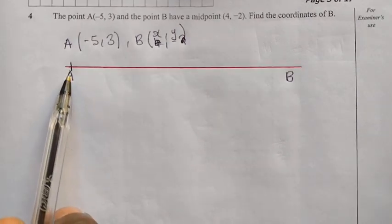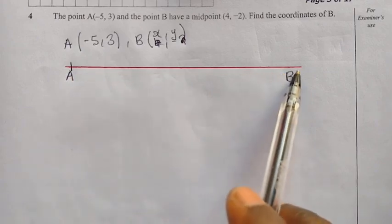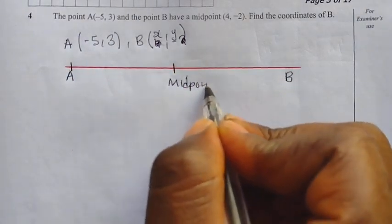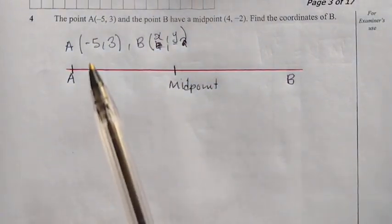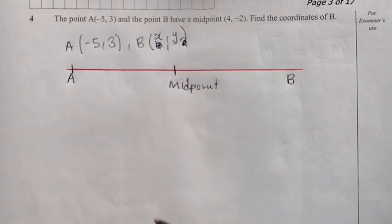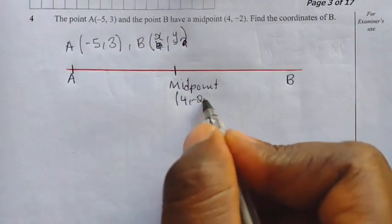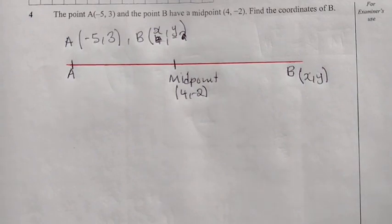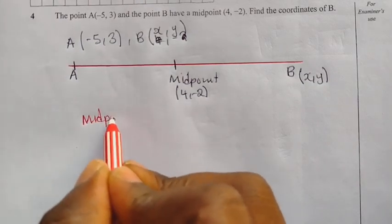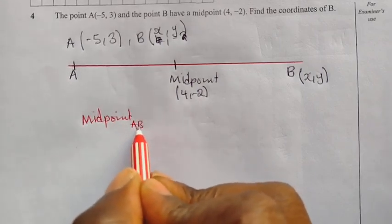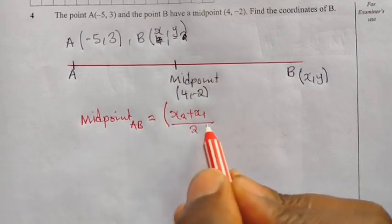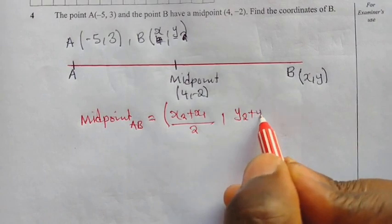We need to find the coordinates of B, represented by X, Y. We use the midpoint formula: midpoint of A, B is equal to X2 plus X1 divided by 2, comma, Y2 plus Y1 divided by 2. We come up with our data: the coordinates for A are negative 5, 3, named X1 and Y1. The coordinates for B are X, Y — which are X2 and Y2 — and the midpoint is 4, negative 2.